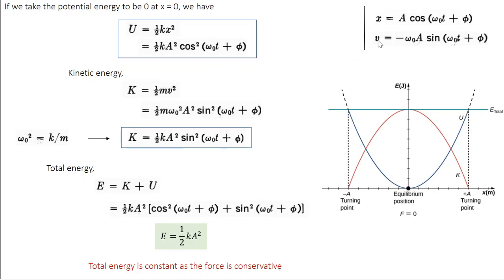Moving on to kinetic energy, which is ½mv². Here v = dx/dt = −ω₀A sin(ω₀t + φ). So the expression for kinetic energy is ½mω₀²A² sin²(ω₀t + φ). If you plot this, you get an inverted parabola represented by the red curve. At the equilibrium position, kinetic energy is maximum because speed is highest there. But at the turning point, velocity goes to zero, so kinetic energy is zero.